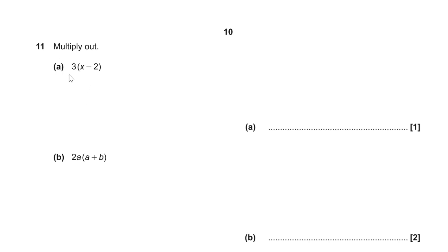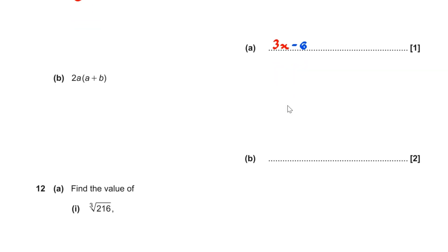Question 11. For part A, multiplying out 3(x − 2): 3 × x = 3x and 3 × −2 = −6, giving 3x − 6. For part B, expanding 2a(a + b): 2a × a = 2a² and 2a × b = 2ab, giving 2a² + 2ab.